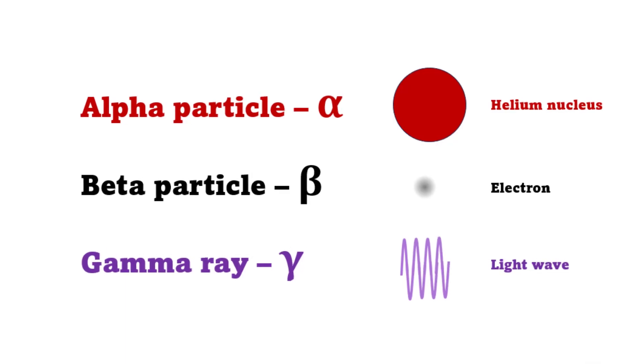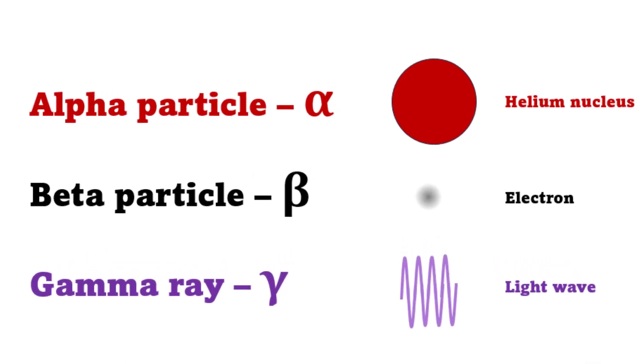In fact, beta particles behaved in exactly the same way as electrons. Spoiler alert, they are electrons, but as we'll see, they come from changes in the nucleus, not from the outer electrons of the atom.